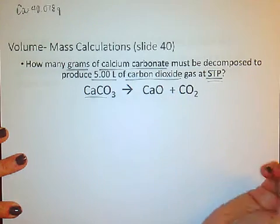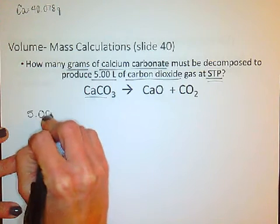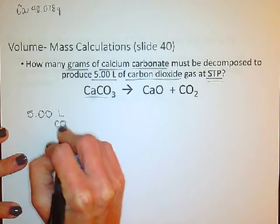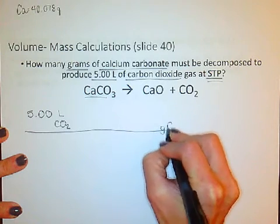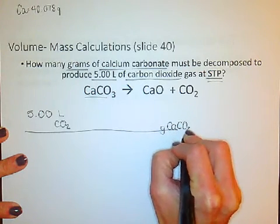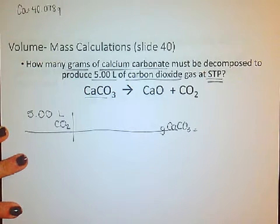So let's do this. We're going to write down the given information first: five liters of CO2. And then let's think for a second here about what we're trying to get to. We're trying to get to grams of CaCO3, which is calcium carbonate.